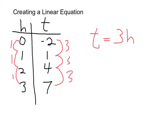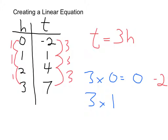Now what we do is we actually multiply 3 times H and see what the difference is between this number and the number we get from just multiplying H by 3. So if I go 3 times 0, I get 0. But the answer in our relationship is negative 2 — that's 2 less than what we have. Let's try it with the next number: 3 times 1 equals 3, but I didn't get 3 in my table of values, I got 1. So again, that's 2 less. At this point it's pretty obvious that every single time it's 2 less than 3 times H. So we're also going to add minus 2 to our equation.